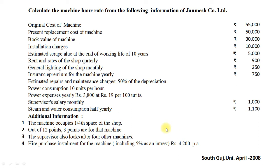Now the most important part is calculating working hours of the machine per annum, derived from the power expense. Our annual power expense is Rs 3,800, and for 100 units we pay Rs 19, so per unit the power cost is Rs 0.19. Total unit consumption would be 3,800 divided by 0.19, which equals 20,000 units. Since the machine consumes 10 units per hour, working hours of the machine would be 20,000 divided by 10, giving us 2,000 working hours. Now let us solve the example.